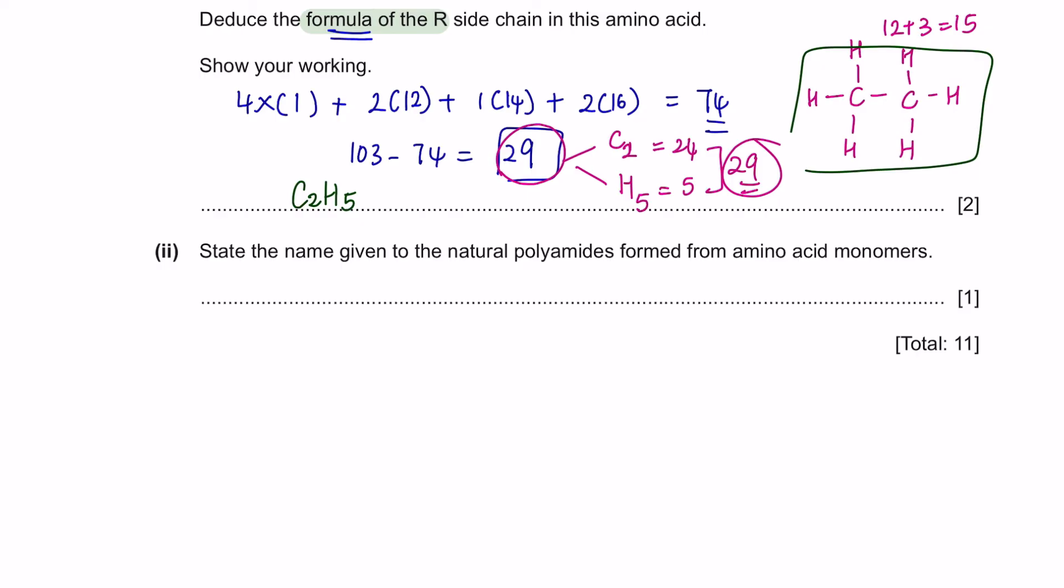Next part 2, state the name given to the natural polyamides formed from amino acid monomers. Again, this is theory. The name given to the natural polyamides are proteins.